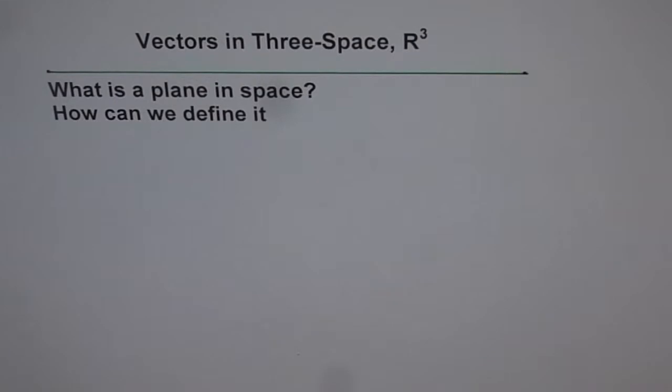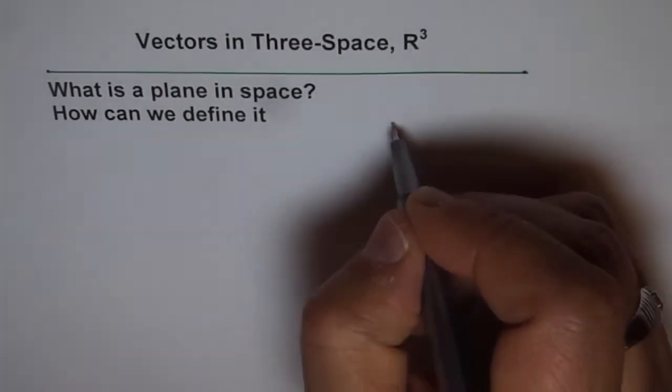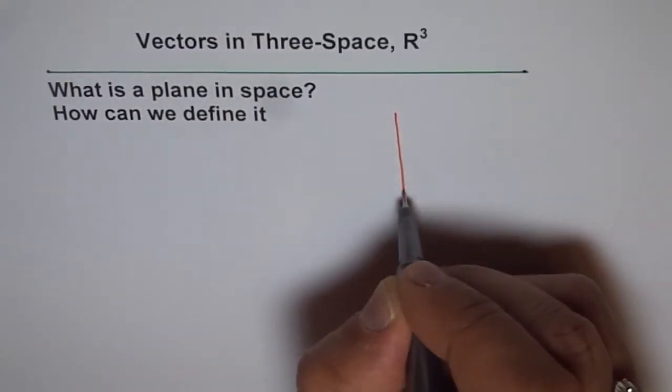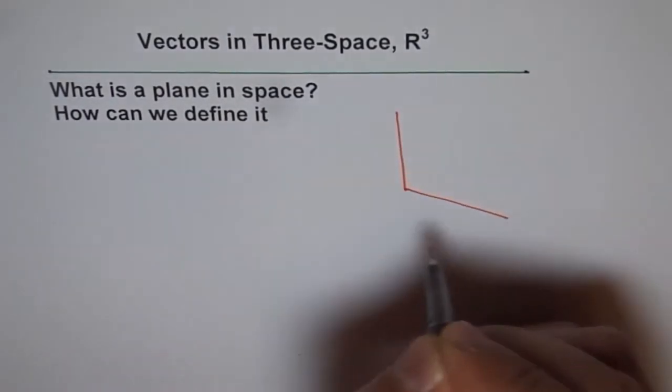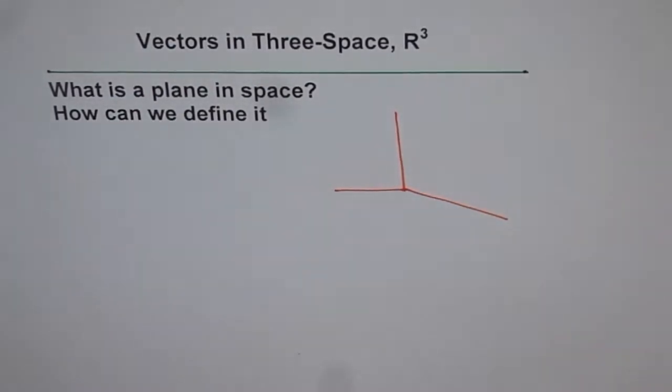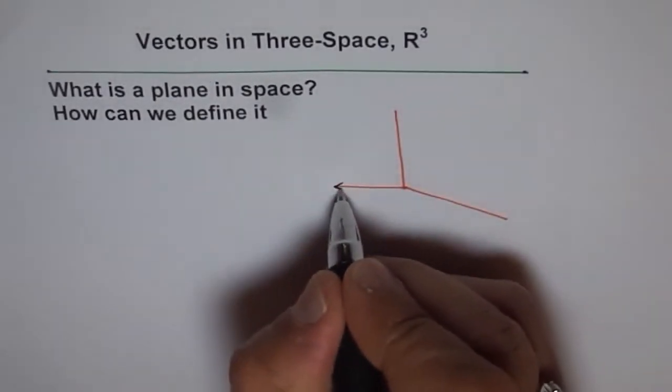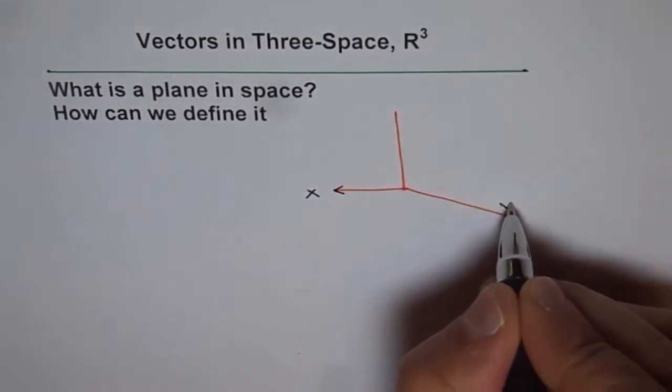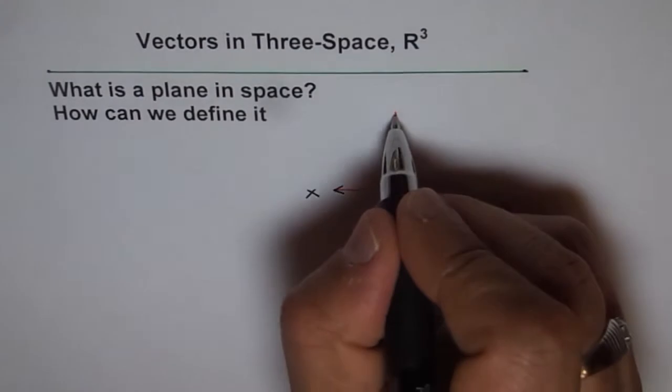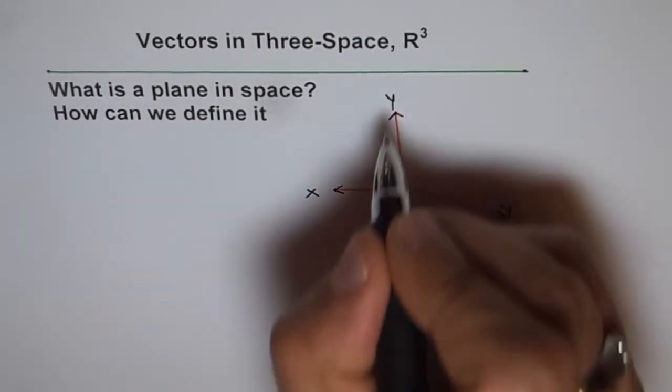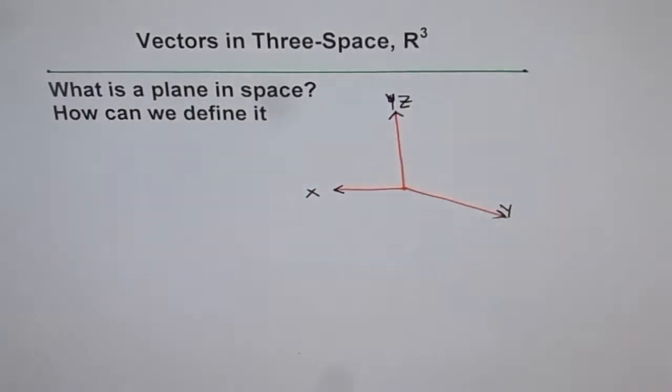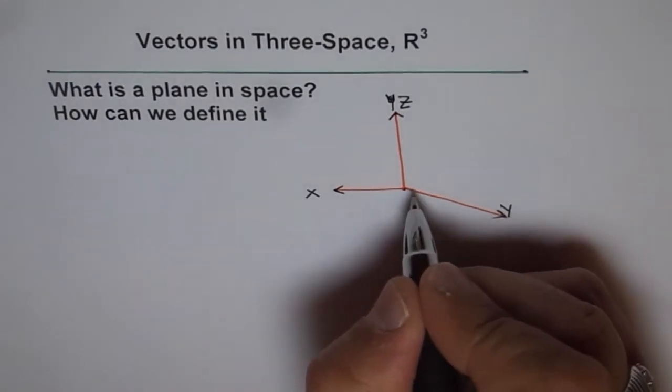So we learned what 3D Cartesian vectors in the coordinate planes are. So we said in R3 we have three coordinate planes and they look something like this. We have X-axis going in this direction, Y-axis in that direction and Z going upwards. That is our origin.